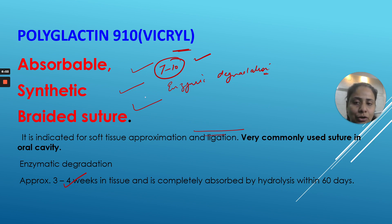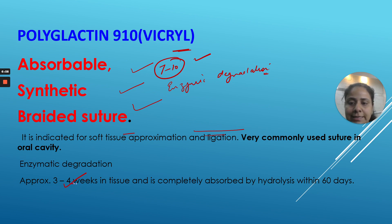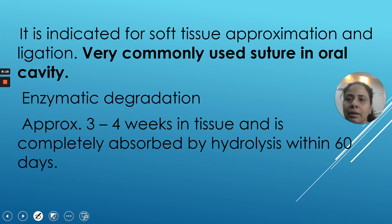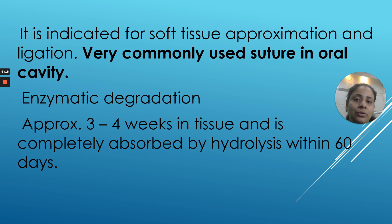For your own knowledge, Vicryl gets weakened within 3 to 4 weeks and is completely absorbed within 60 days. It is a very commonly used suture material.